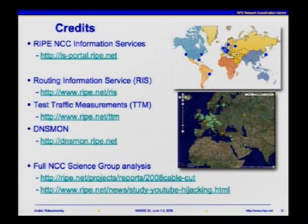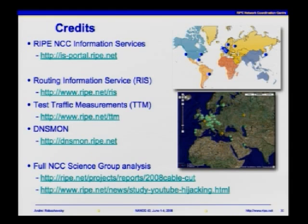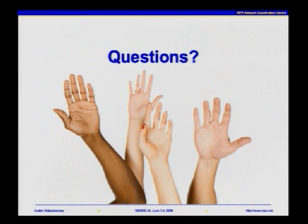As a conclusion, I'd like to give you some URLs and credits. Those tools are maintained and developed by the team called the Information Services Department at the RIPE NCC. If you'd like to learn more about the Routing Information Service, TTM, or DNS Mon, those URLs are provided. Based on data collected by those tools, we at the RIPE NCC have also done interesting analysis of recent events on the Internet, such as cable cuts and the YouTube hijacking incident. We have a science group at the RIPE NCC that does analysis of this data, and those reports are available from the RIPE NCC website. That concludes my presentation. Thank you.